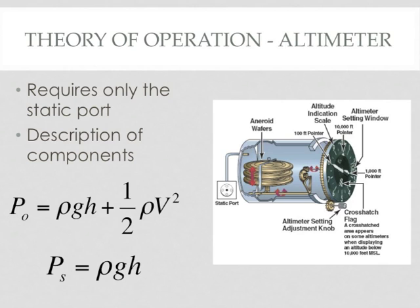The altimeter is more straightforward than the airspeed indicator as it only requires input from the static source, which is installed in such a way to minimize effects of any oncoming air. Within the altimeter is an aneroid wafer, which is simply a hermetically sealed or airtight capsule. Surrounding the capsule is the static pressure sensed by the static port. As the airplane climbs or descends, the static pressure decreases or increases respectively, causing an expansion or contraction of the aneroid wafer, which in turn drives the needle on the altimeter.